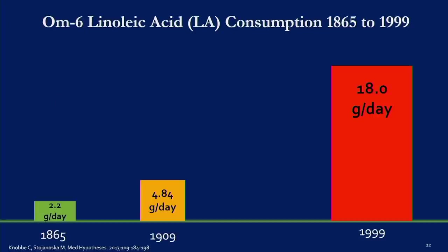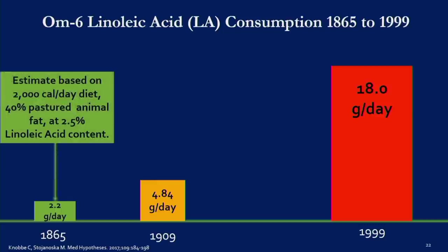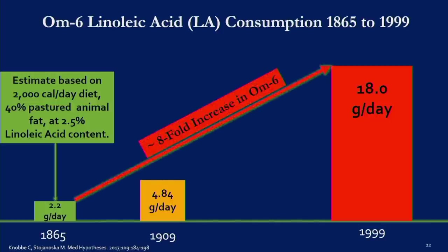Published data for 1909 and 1999: omega-6 in 1909 was 4.84 grams per day — confirmed from our own data and from Tonya Blasbalg at the NIH. By 1999, we're at 18 grams a day. I calculated that in 1865, on a typical 2,000-calorie diet with 40% from pastured animal fat and 2.5% linoleic acid, we would have consumed just 2.2 grams of omega-6 per day. Over 135 years, this elevated approximately eightfold.